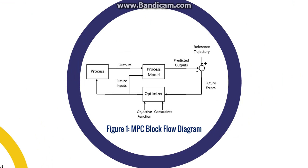This is a block flow diagram of a process that uses model predictive control. The control takes place in the process model and optimizer. The optimizer contains the objective function and constraints, and this is used to determine the control law. The predicted outputs are compared to the trajectory and the errors are minimized. The future outputs are sent to the process, and then this entire process is repeated.